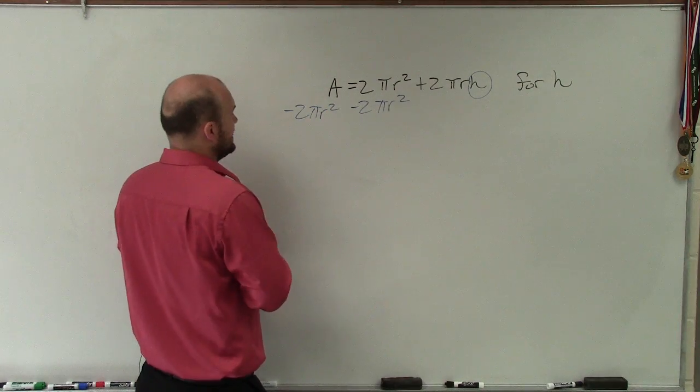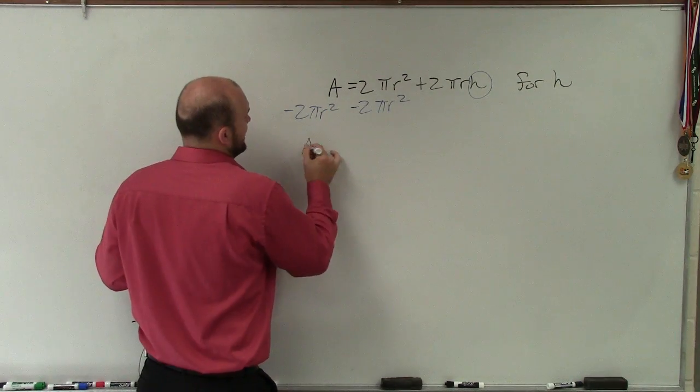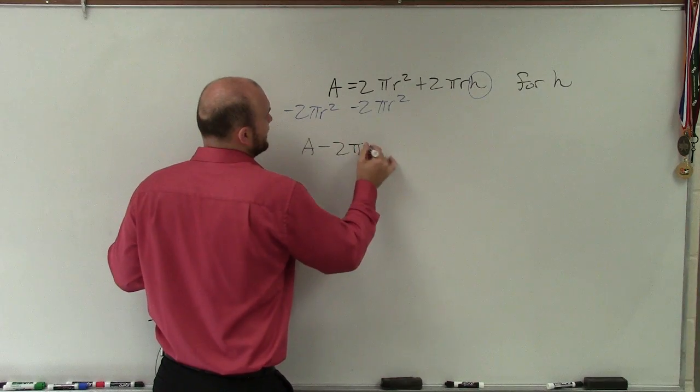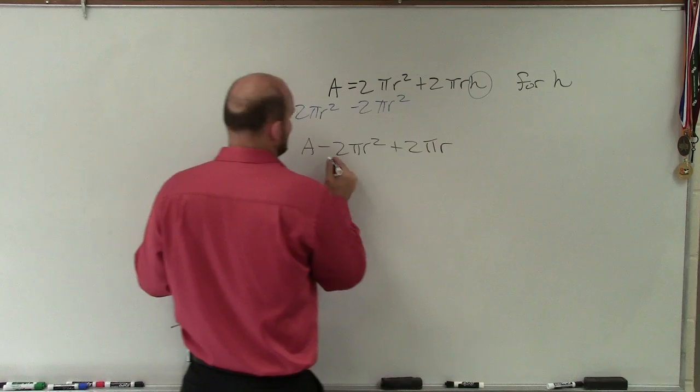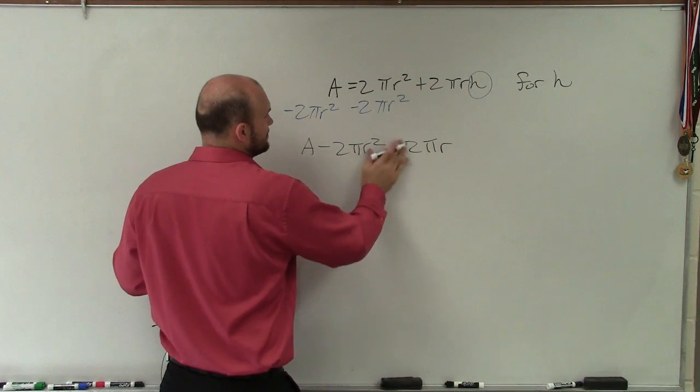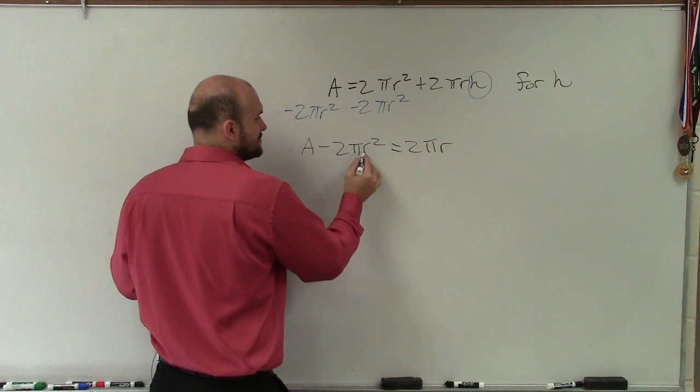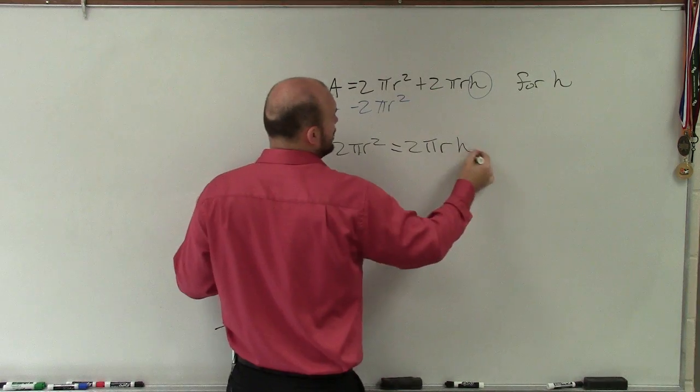So therefore I now have A minus 2πr² equals 2πrh.